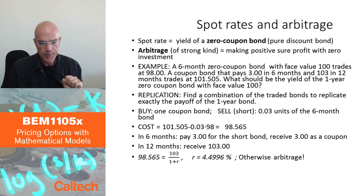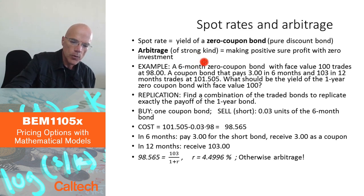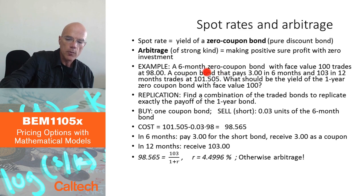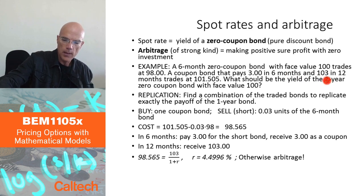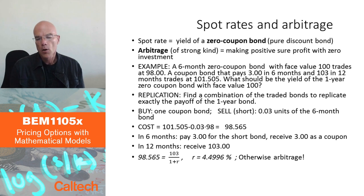Here is our first example. We can see there is a six-month zero coupon bond with face value $100 that you can buy for $98. We also see a one-year coupon bond that pays $3 in coupons after six months and pays $103 (face value plus coupon) after twelve months, priced at $101.505. The question is: is this enough information to determine the yield of a one-year zero coupon bond with face value $100?